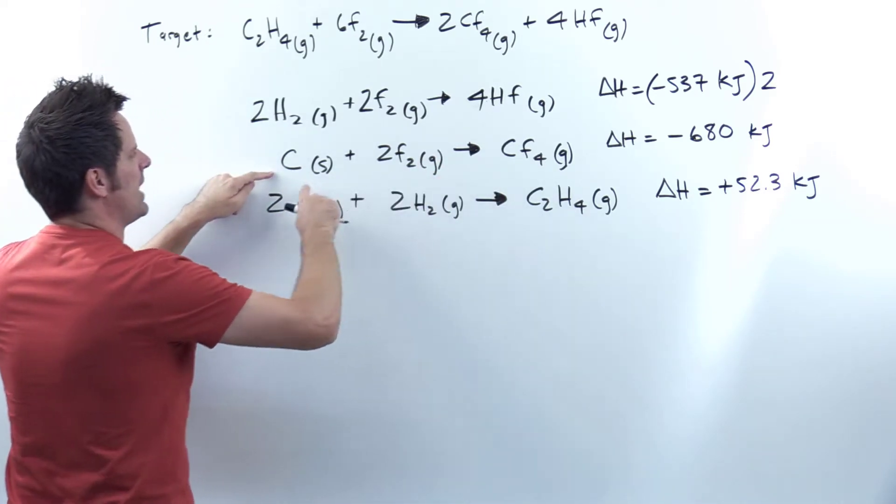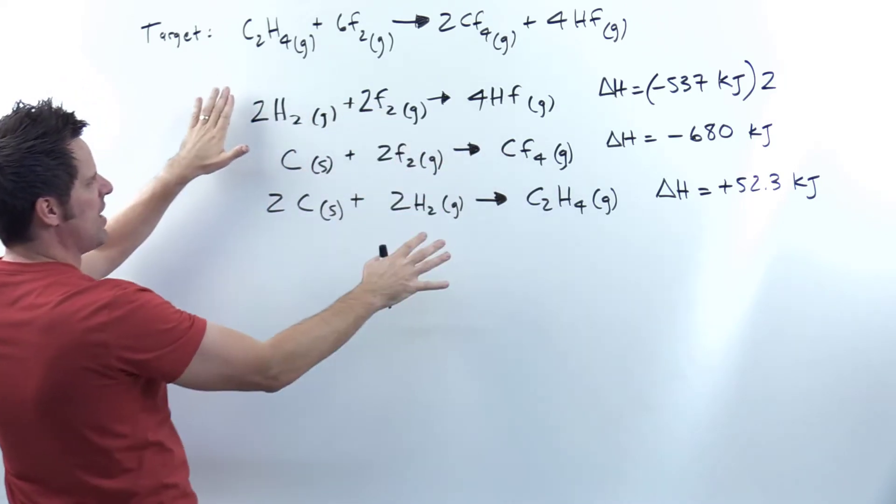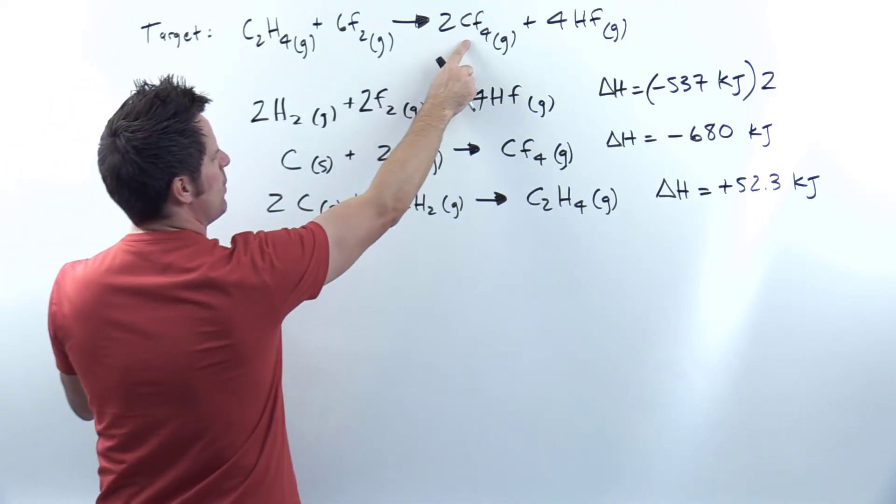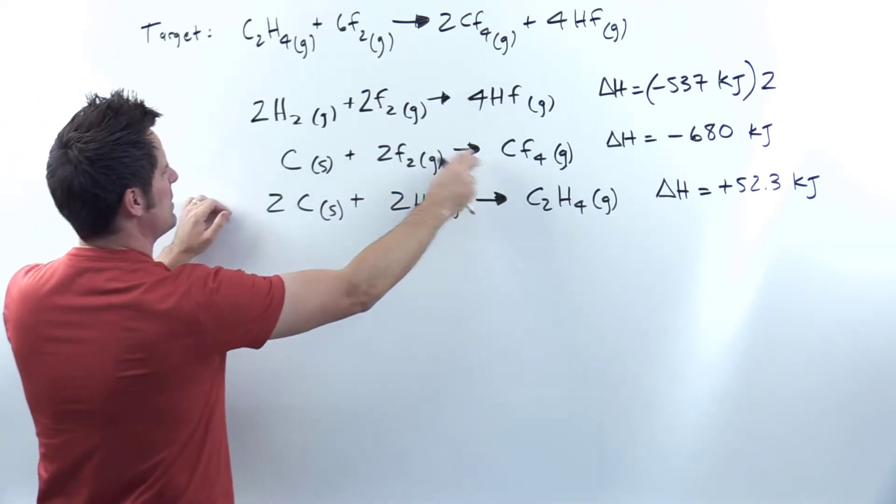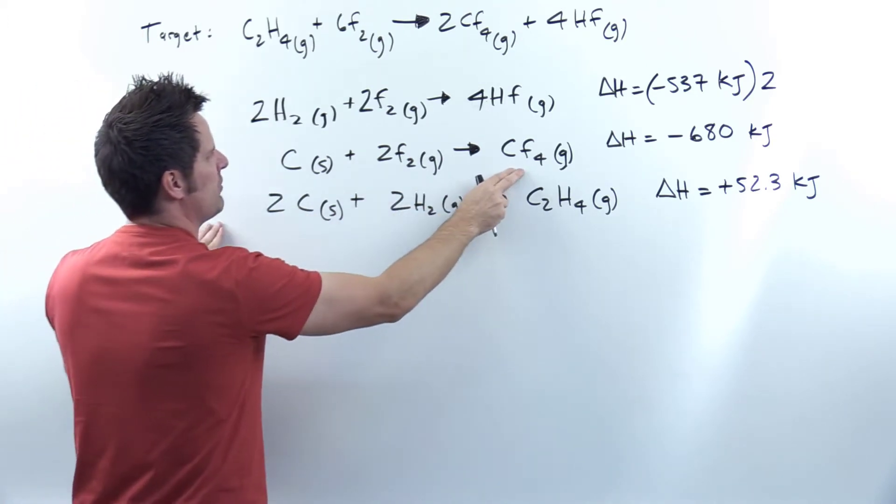Now we go down here, same strategy. Do I see anything in this equation that is unique to this equation, not found in any of the others, but is also found in the target? Yeah, I've got CF4 here. I've got CF4 here. I don't see any other CF4s anywhere, so I think that's where I'm going to focus. I focus on CF4.